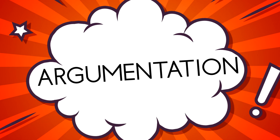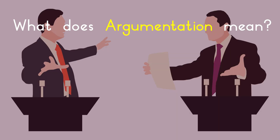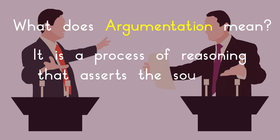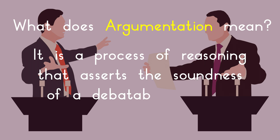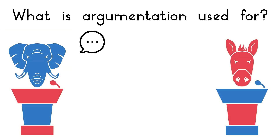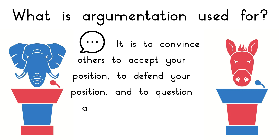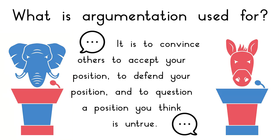Today's lesson is on argumentation. What does argumentation mean? It is a process of reasoning that asserts the soundness of a debatable position, belief, or conclusion. What is argumentation used for? It is to convince others to accept your position, to defend your position, and to question a position you think is untrue.